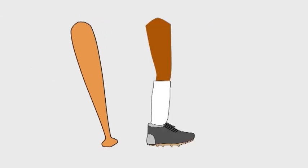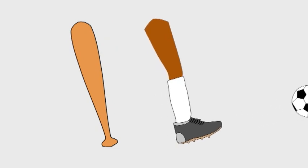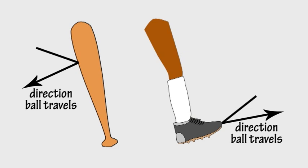When you hit a softball or kick a football that is coming towards you, the ball bounces off the bat or your foot and travels away from you in a different direction. In these cases, you have applied a force that changes the direction of movement of an object.